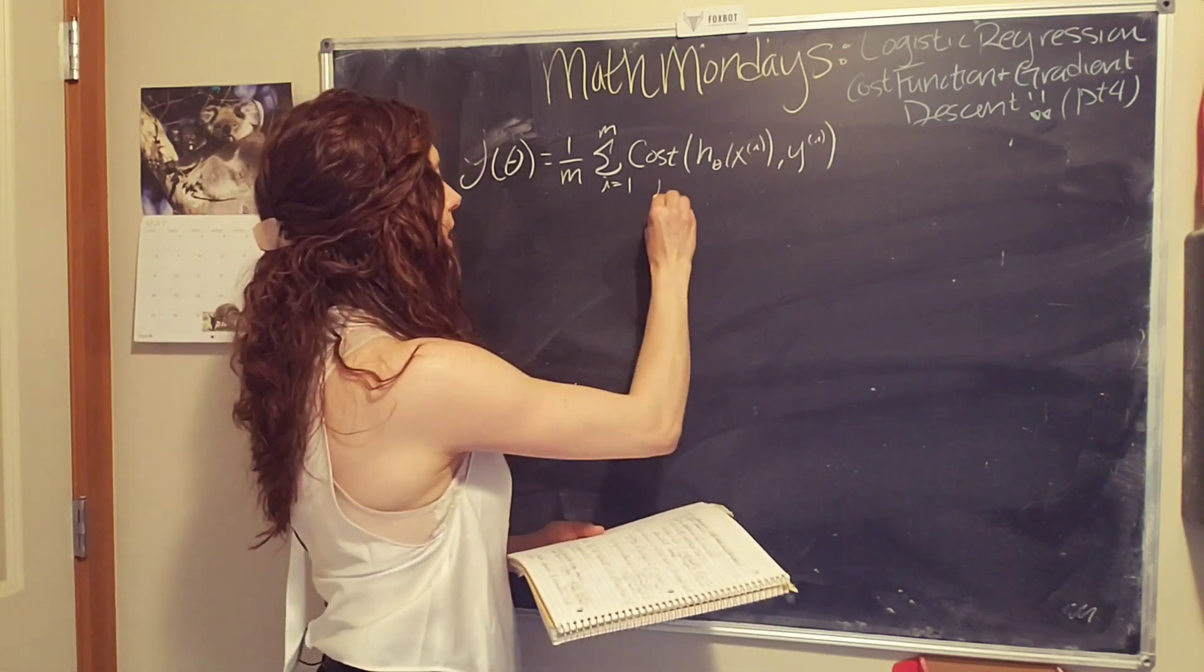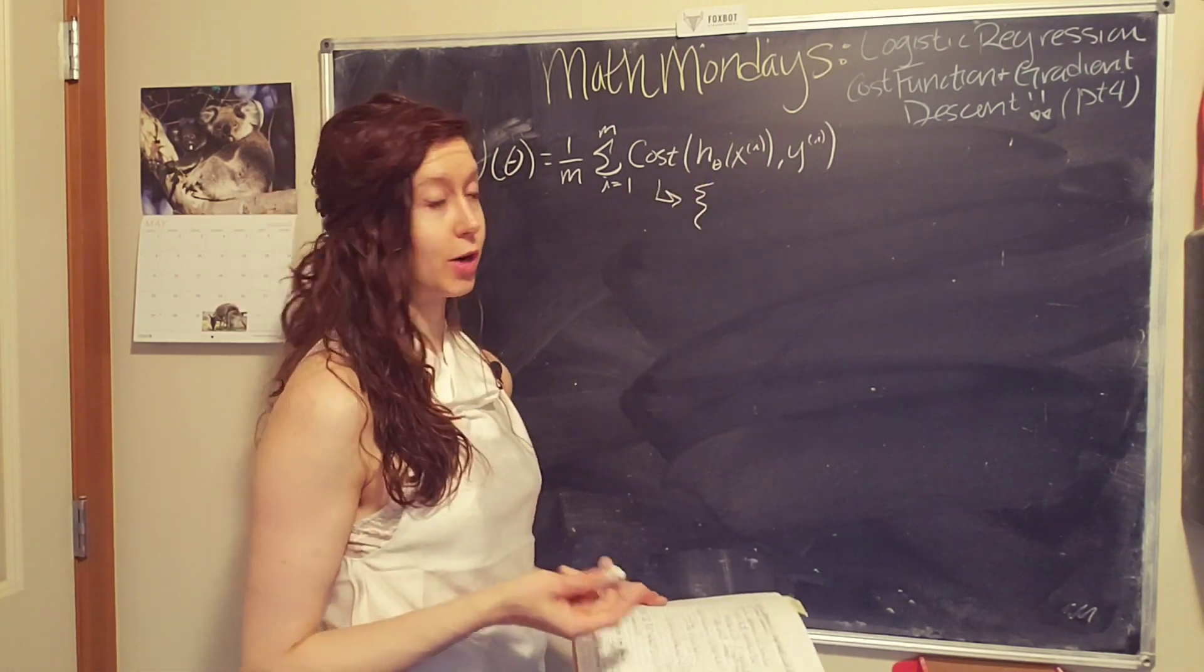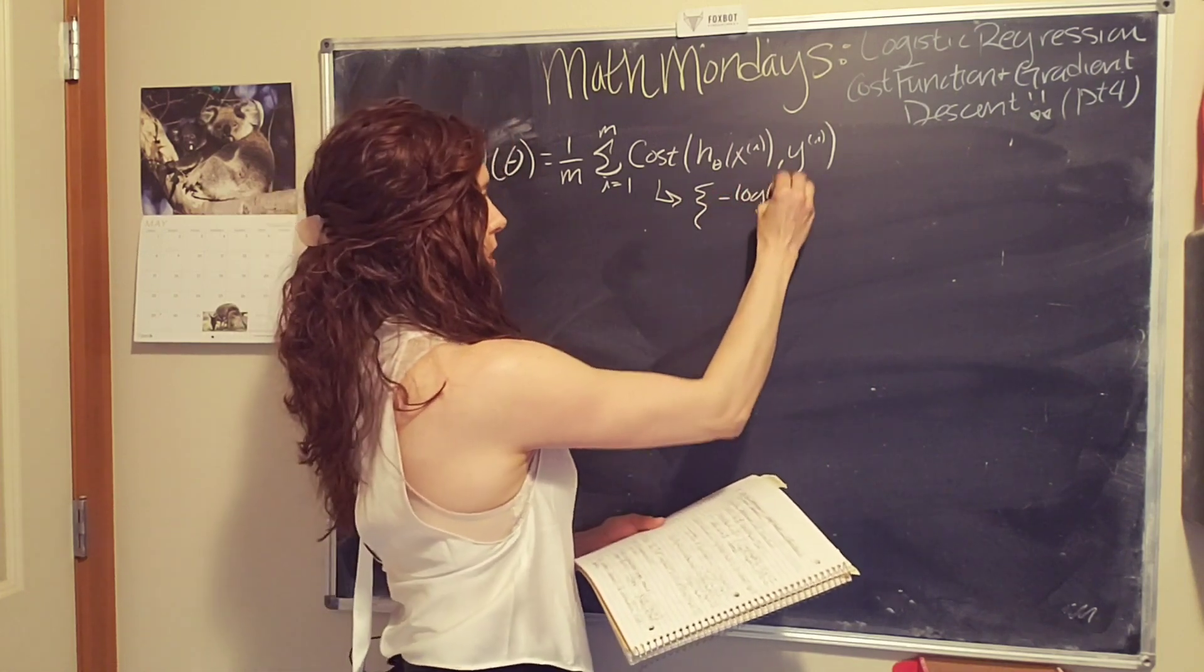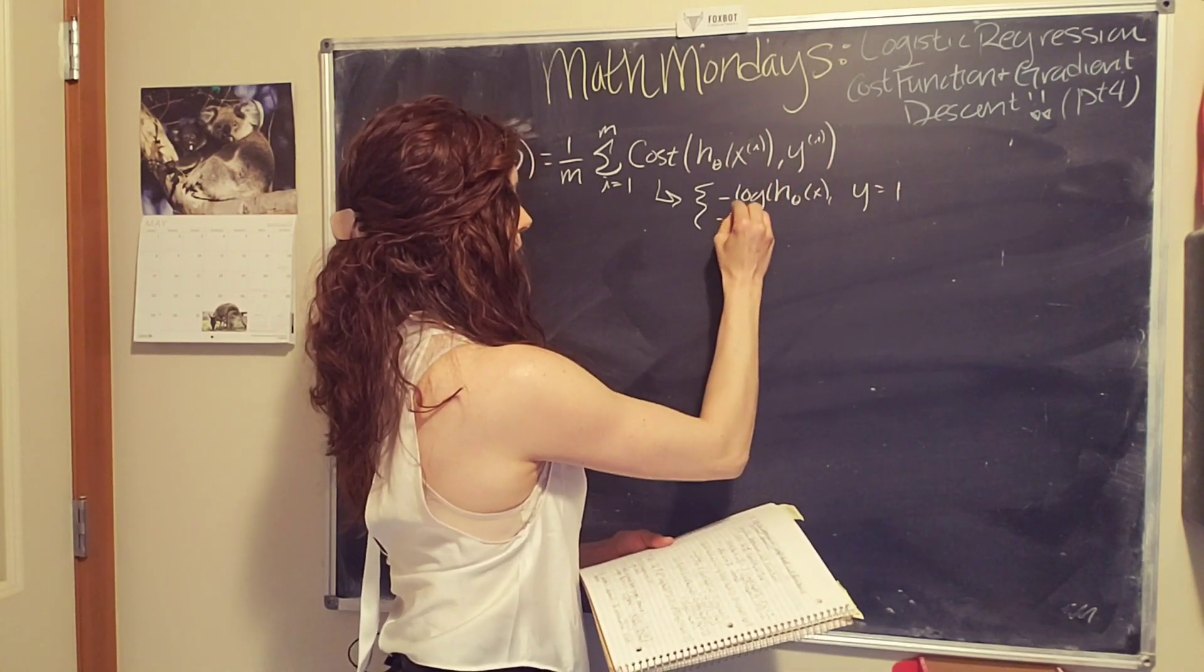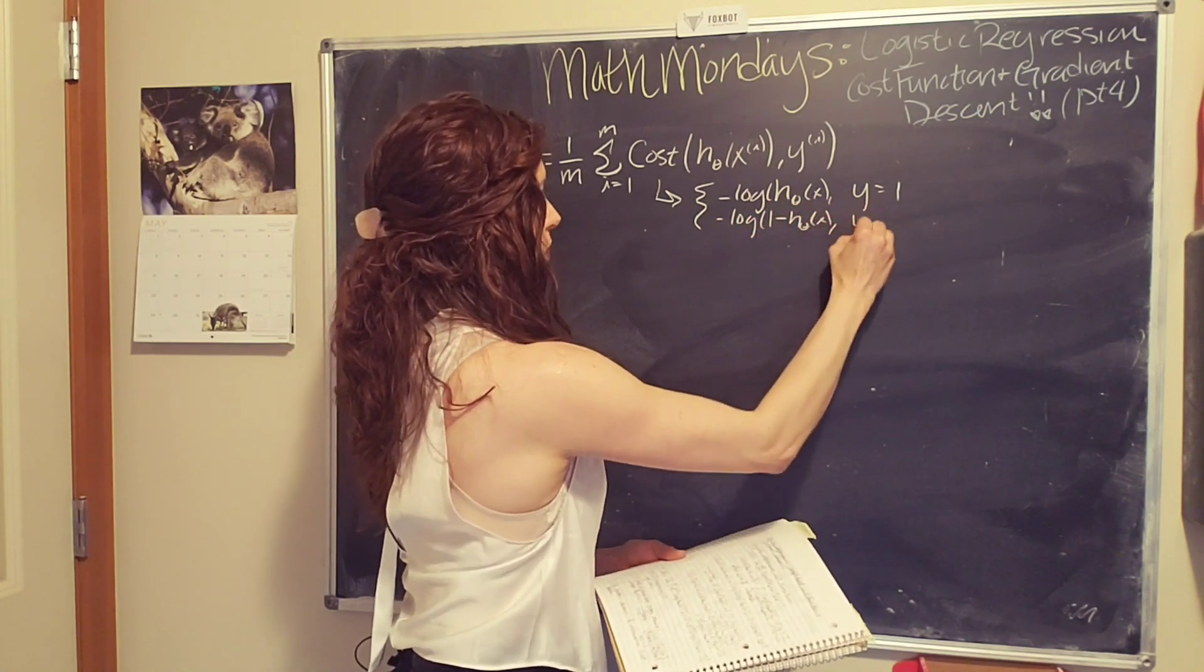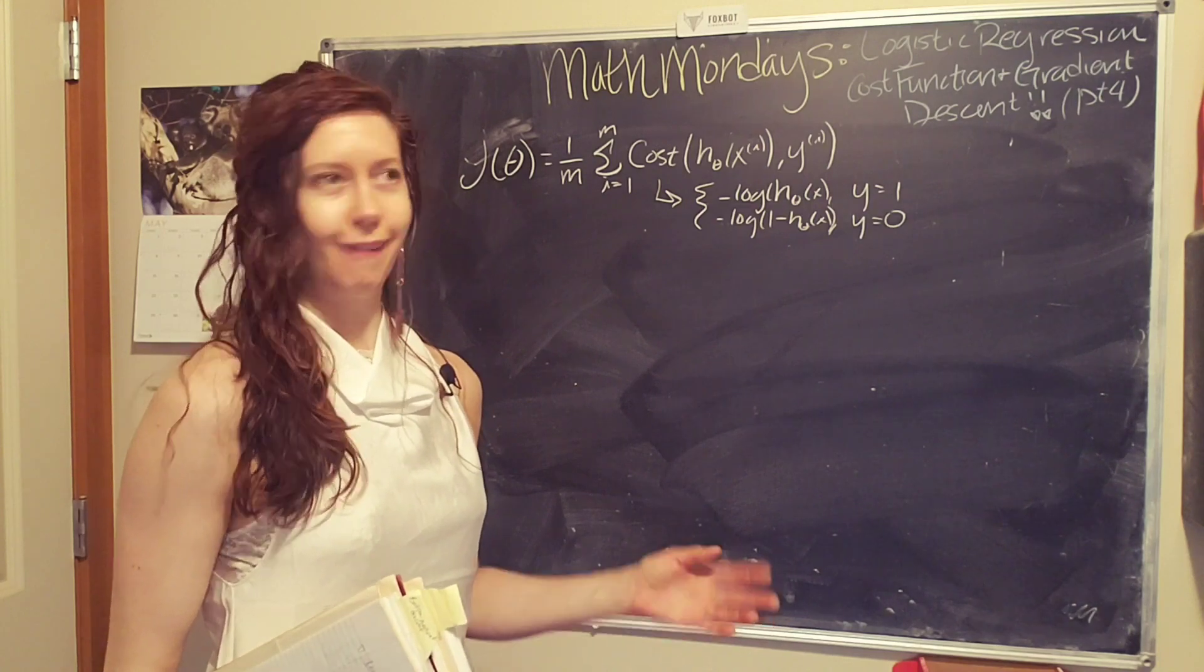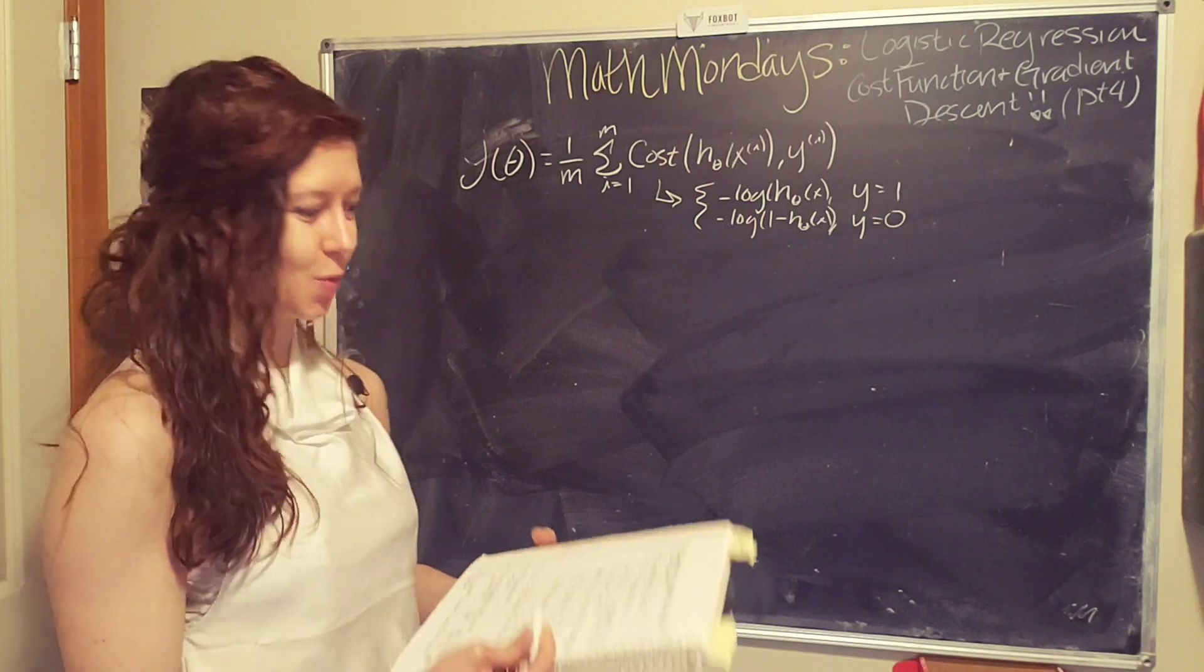And so last time, we figured out that this, for logistic regression, when we're dealing with the sigmoid function, we can use a formula of negative log of our hypothesis function for y equals one, and negative log of one minus h theta of x for y equals zero. But how do we shove this into a sum?